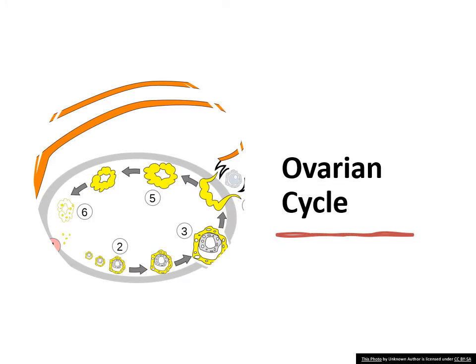At puberty, the female begins to undergo regulatory monthly cycles that are under hormonal control. At this time, 15 to 20 growing follicles will be recruited to continue their development, whereby usually only one will reach full maturity as a Graafian follicle. The rest will degenerate. All these occur during each ovarian cycle.